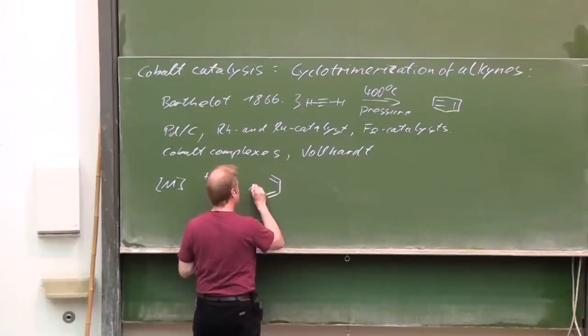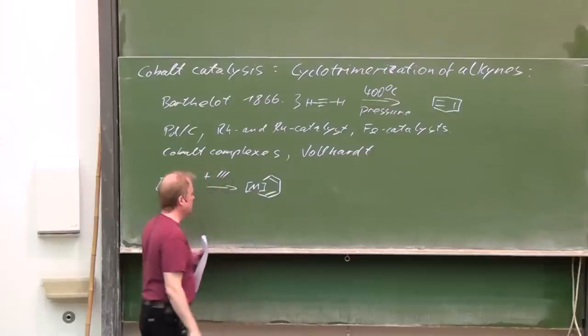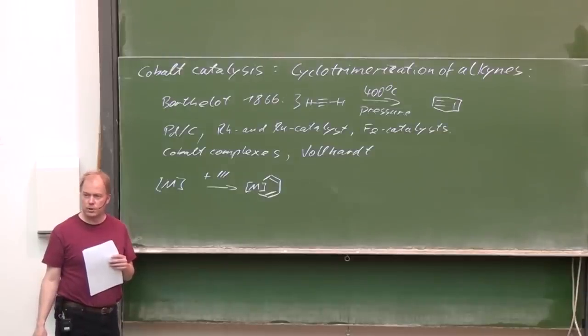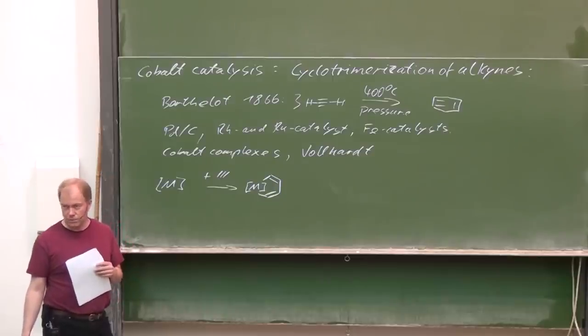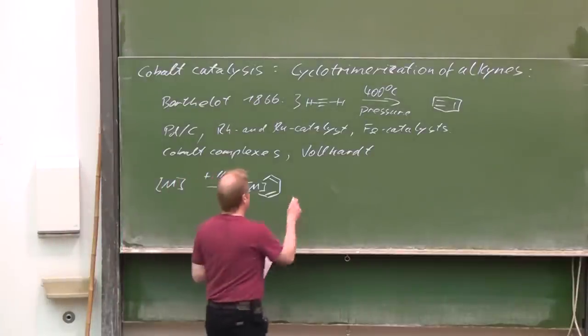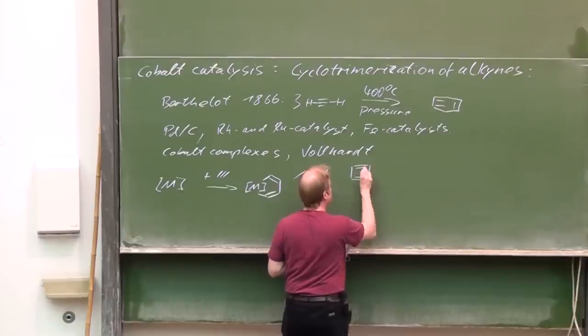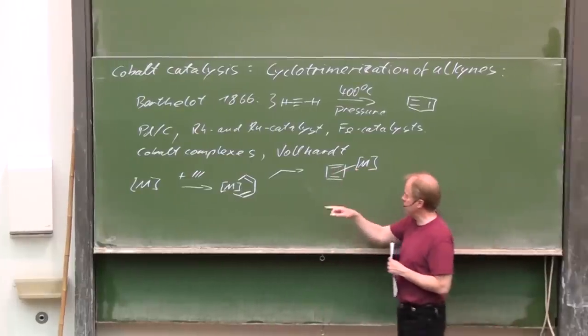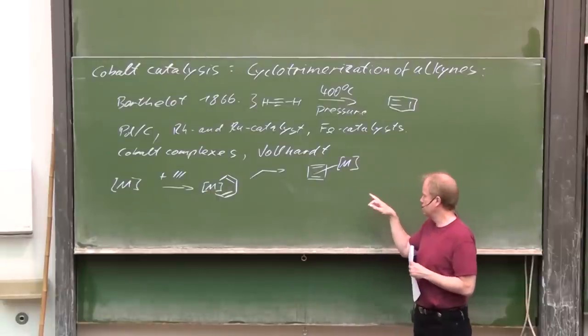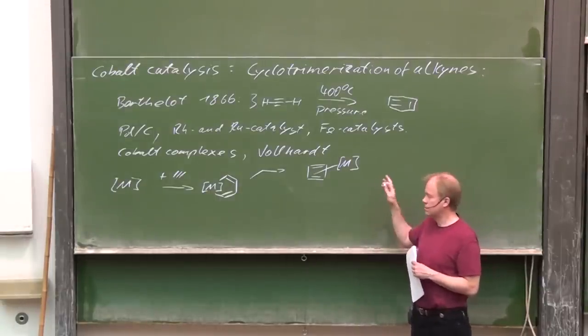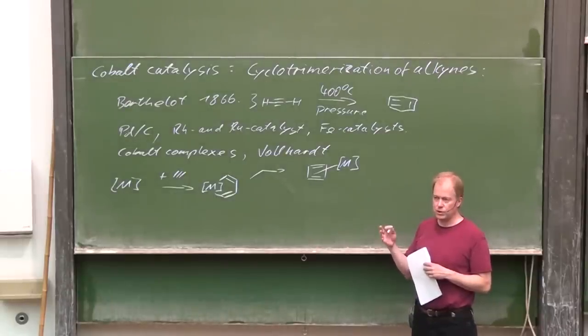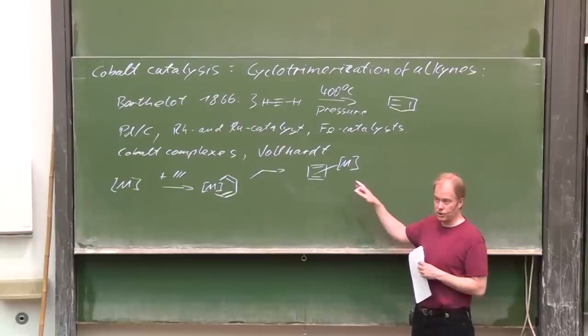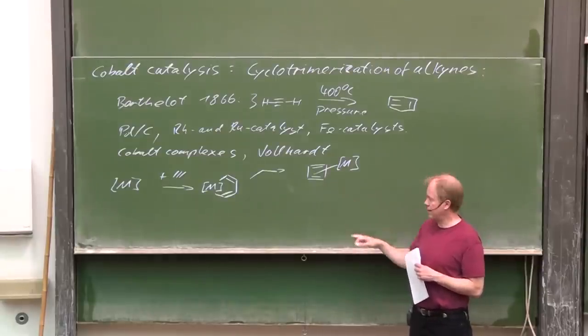And then metallocyclopentadienes can be formed. We know this type of structures from Trost's palladium chemistry. It is known that some complexes then transform, some metallocyclopentadienes can transform to cyclobutadienyl complexes. Cyclobutadienyl is anti-aromatic, but it can be very stabilized by complex formation and indeed these are rather unreactive then.